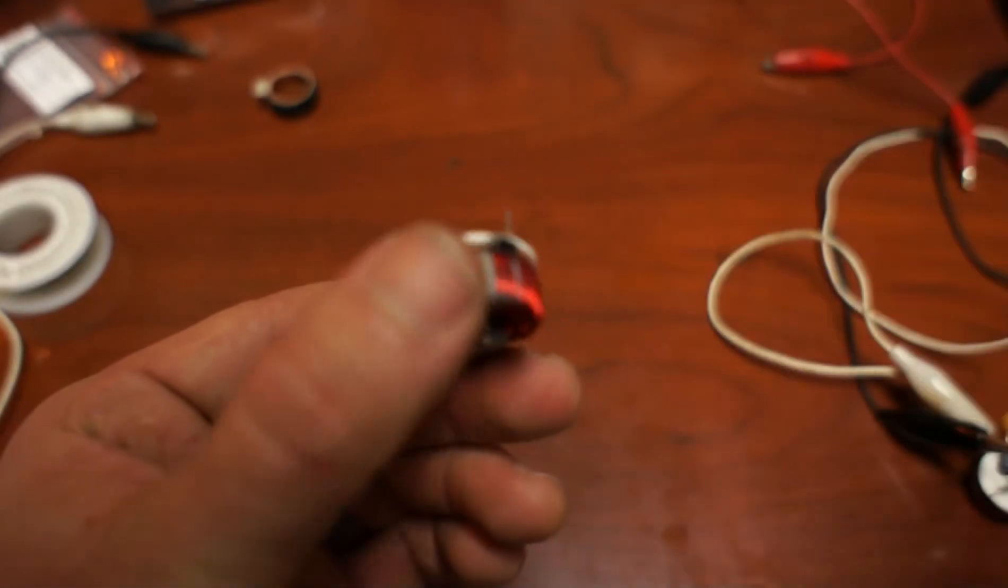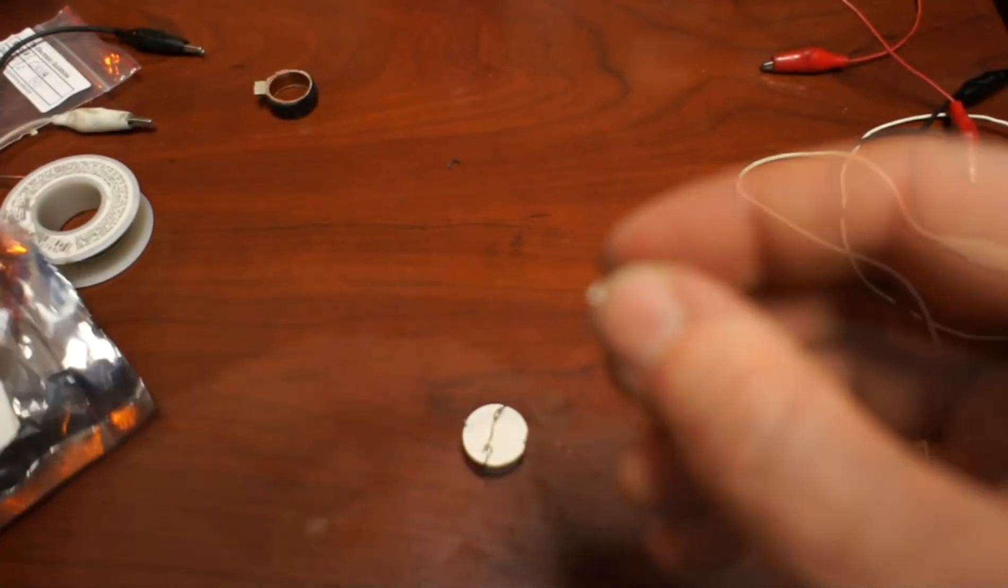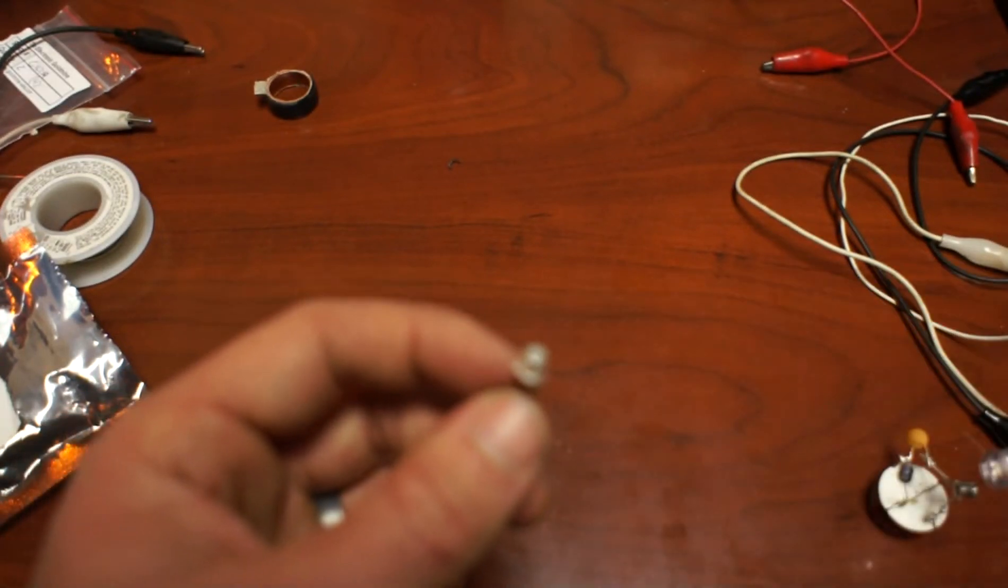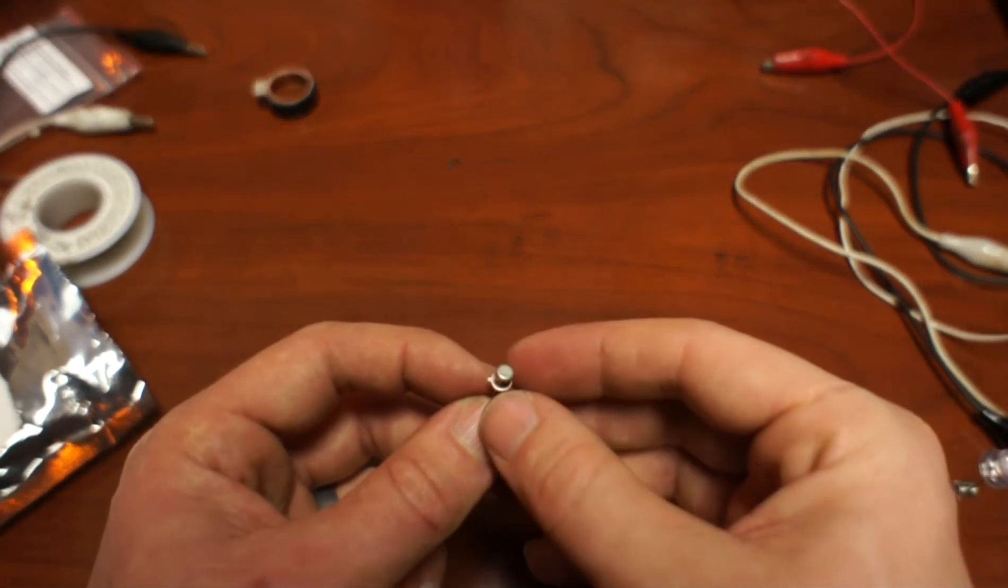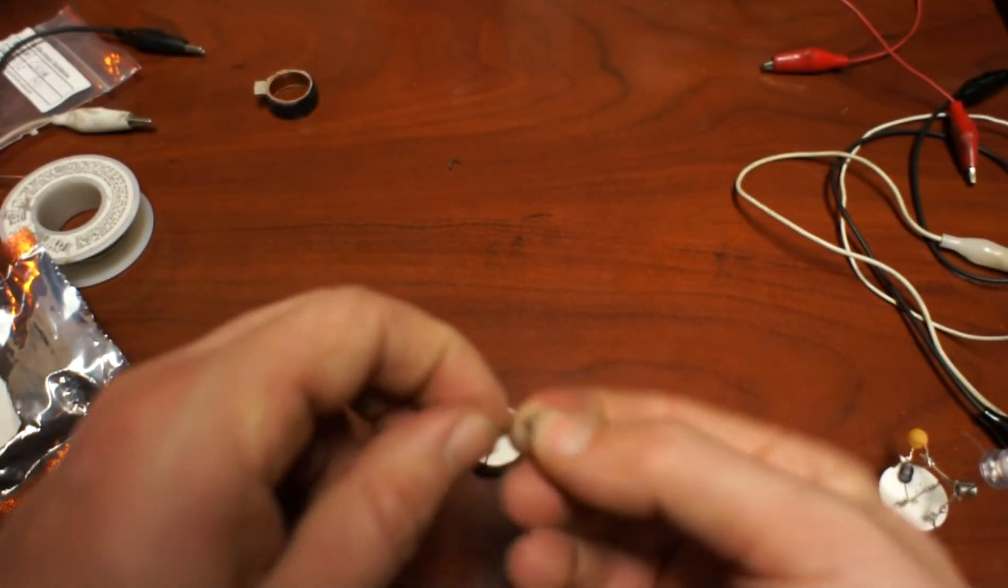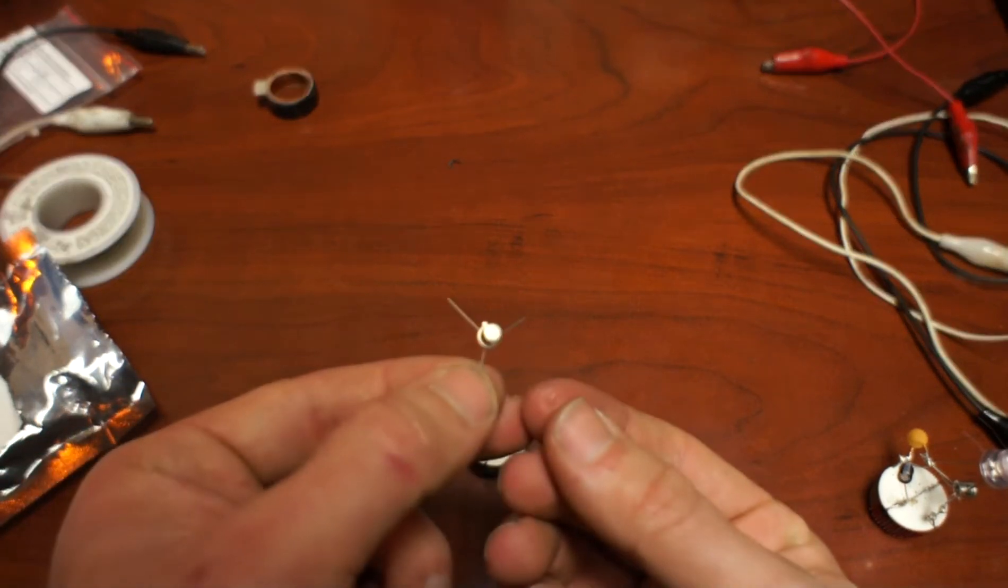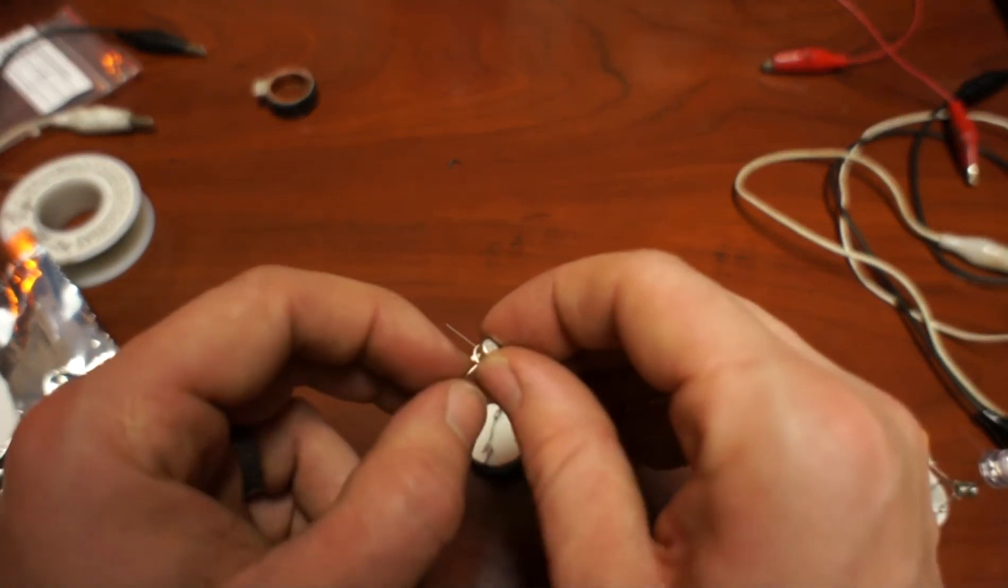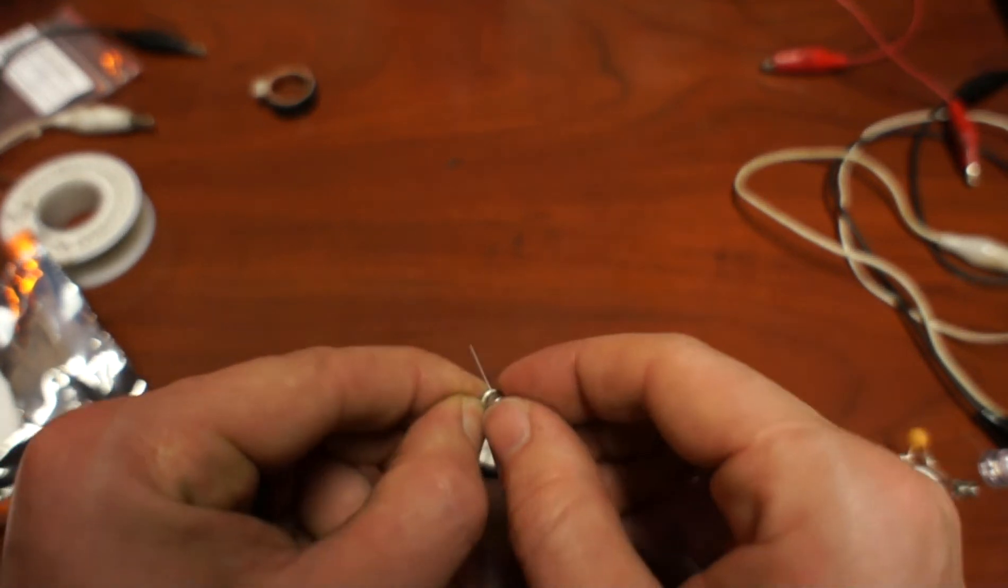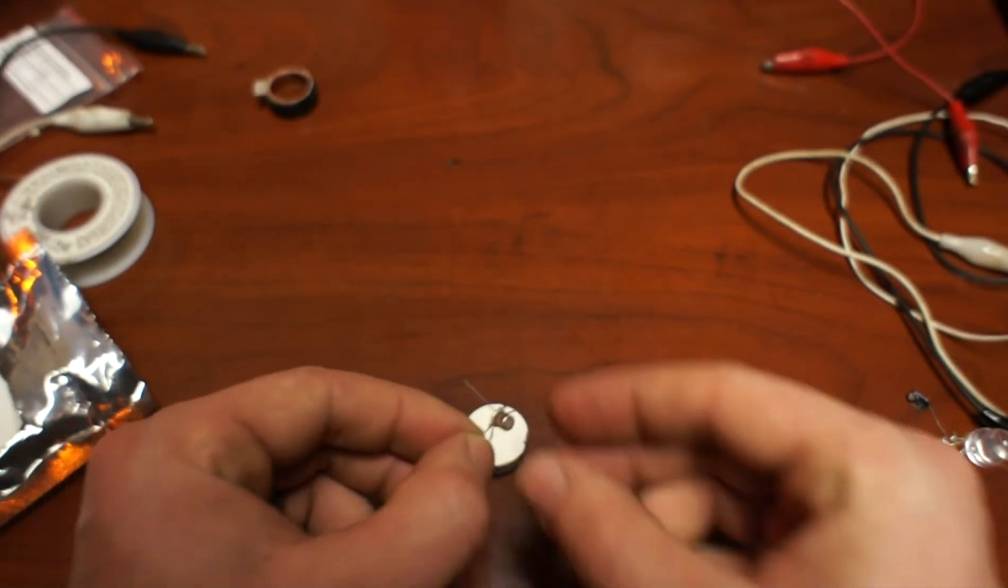Taking our transistor here, which is an NPN transistor, I'll give the exact part link and reference on my website. Let's bend each leg out. You can see the angles there. There's a little indicator here on the housing, so that will be a point of reference.